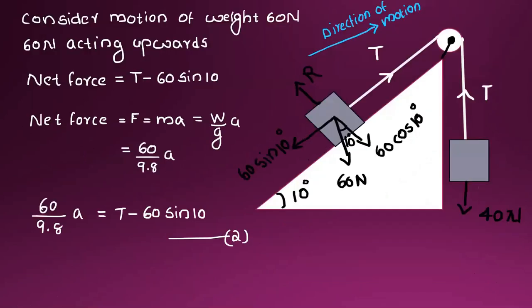Now for the second body on the inclined plane, the direction of motion is upward along the plane. Tension acts upward (positive) and the component of weight along the plane acts downward (negative). So the net force equation is: T minus 60 sine 10 equals 60 divided by 9.8 times A.